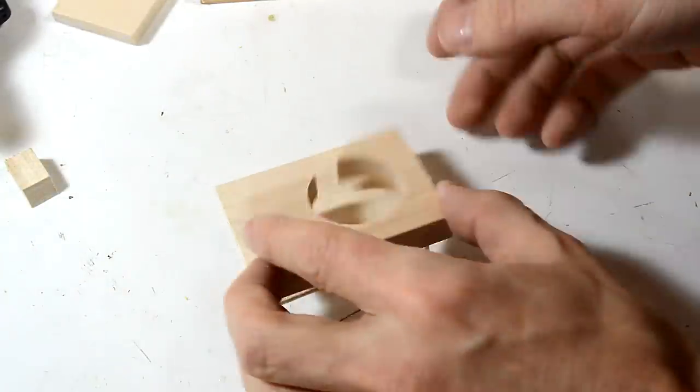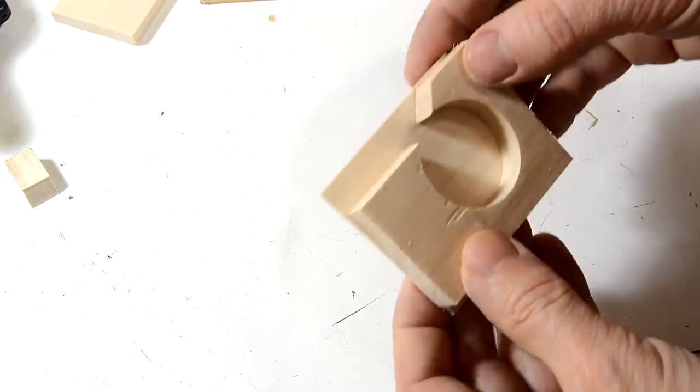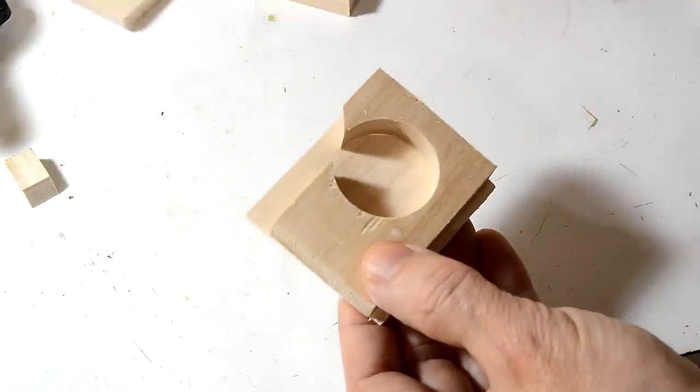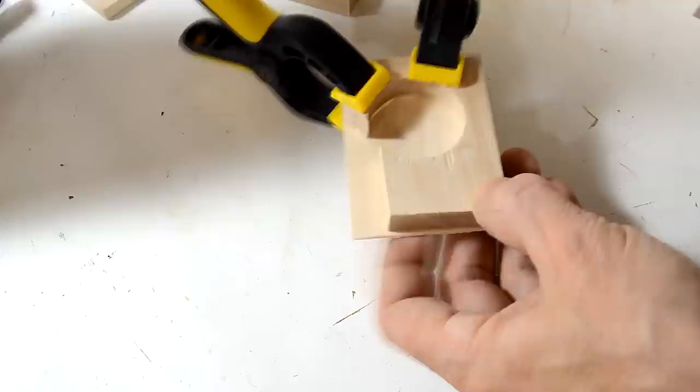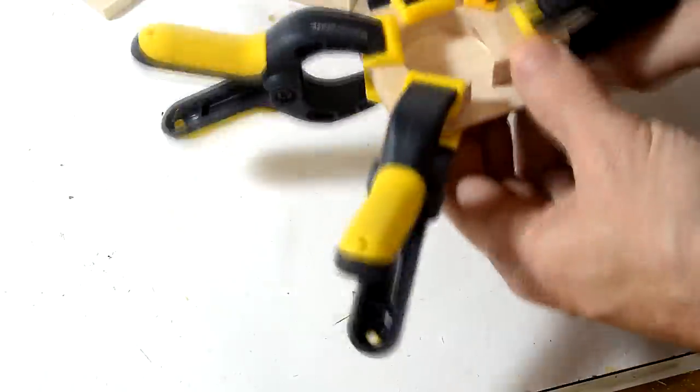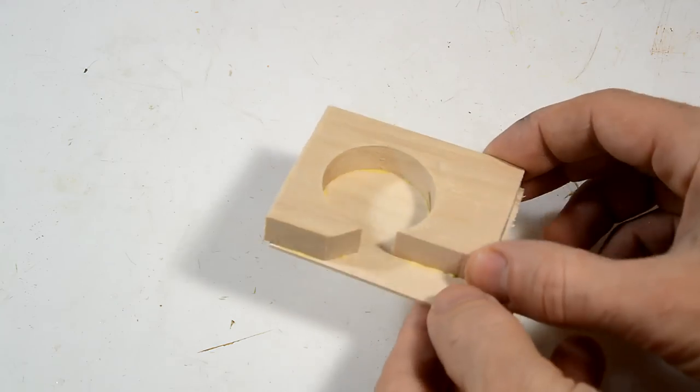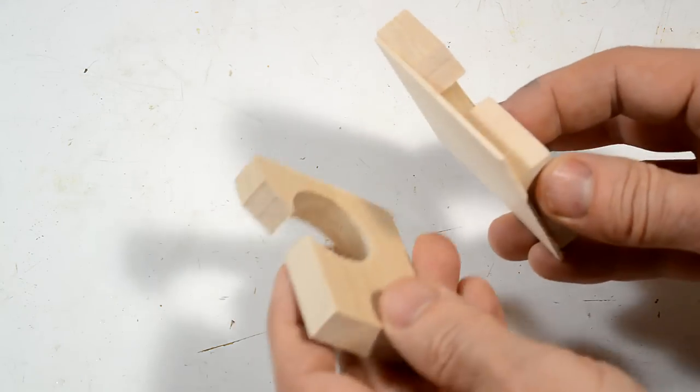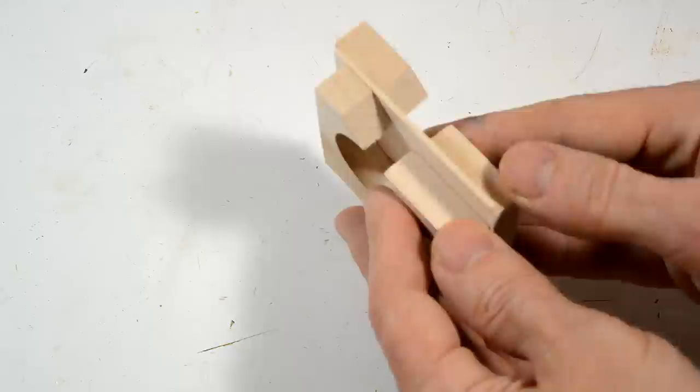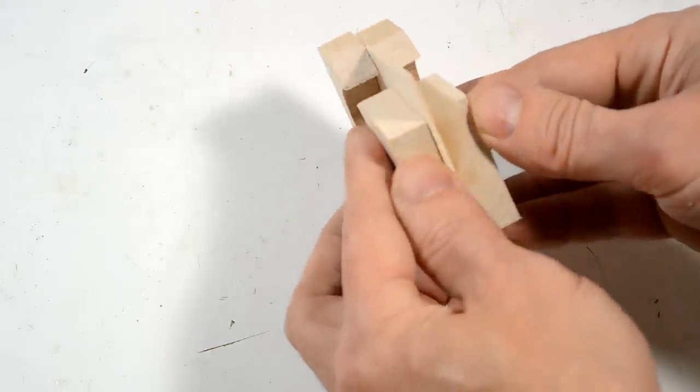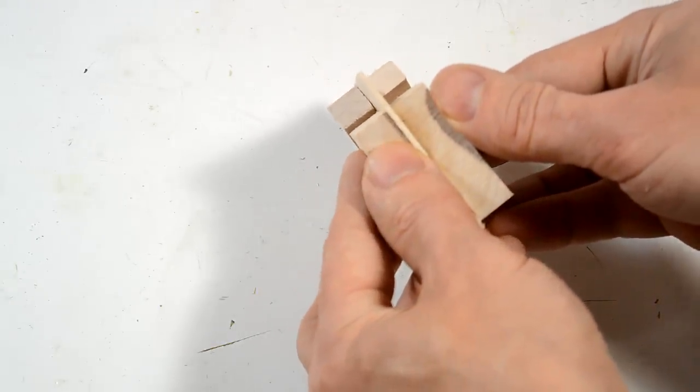I'm now ready to glue the two whistle bodies on either side of the dividing wall. So the glue's kinda dried on here. And now I can add the other side. And I wanna line up these slots here and also the way the air comes in here.